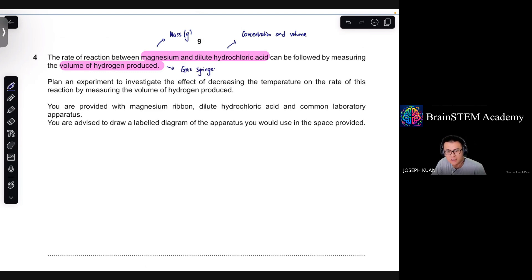Or otherwise using an inverted burette. Plan an experiment to investigate the effect of decreasing the temperature. So the word temperature is mentioned means that you should think of using a thermometer. The word rate tells you that you should be using a stopwatch, because rate is related to time. So you will need a stopwatch for that.